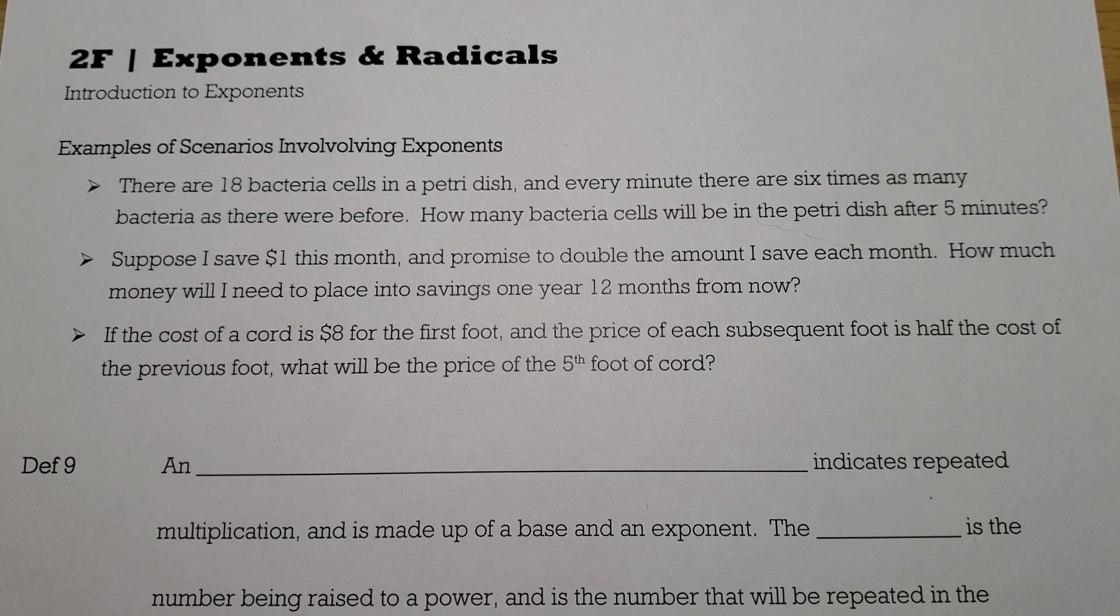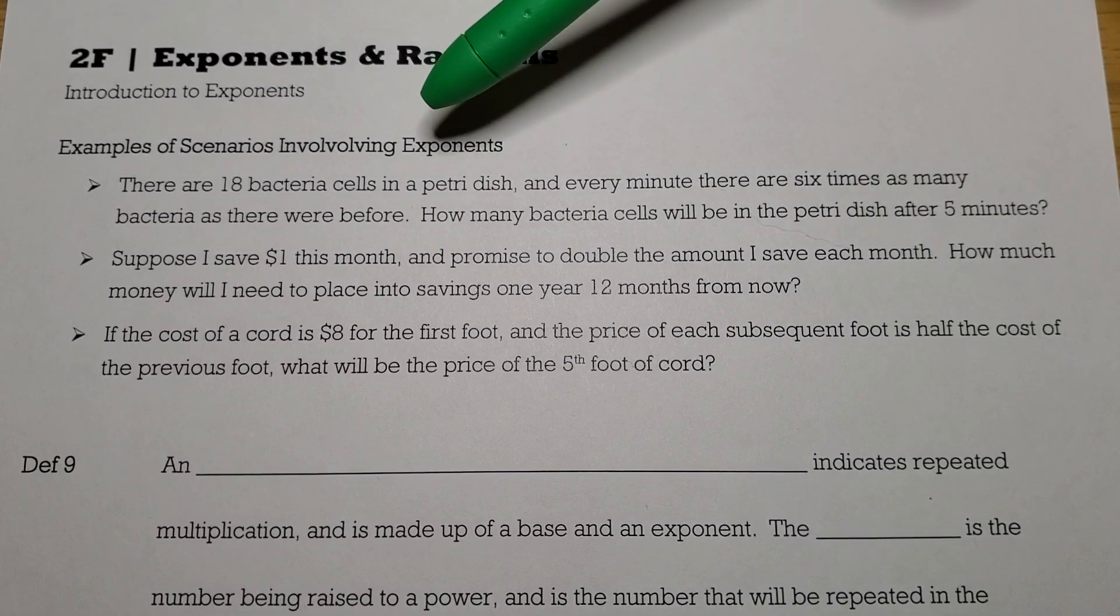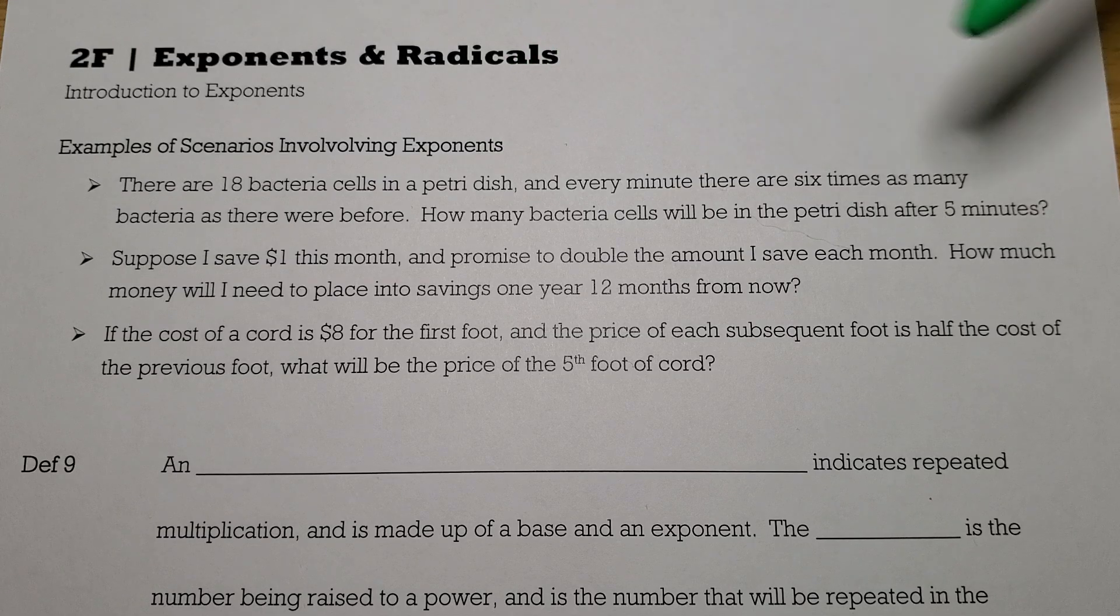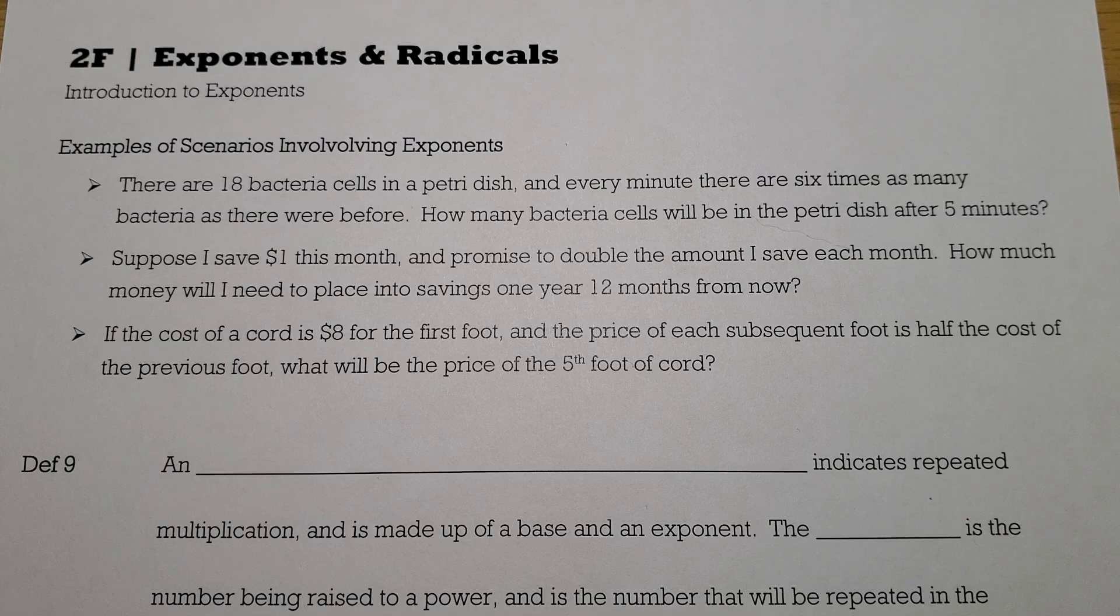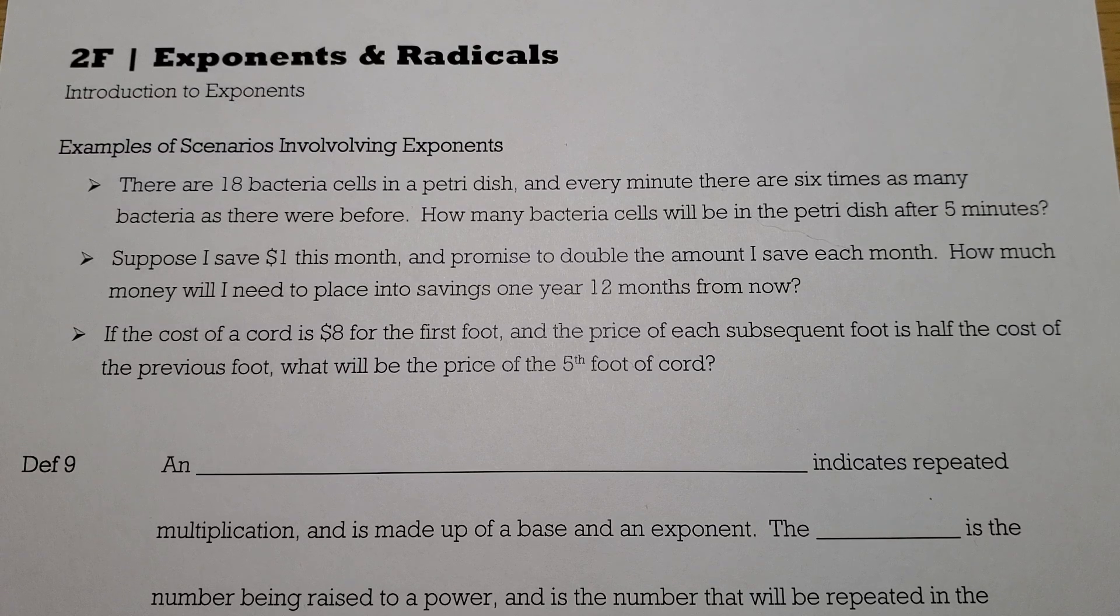I wanted to start out with a few different examples of where you might see exponents happening in the news or in your day-to-day life. For example, you start out with 18 bacteria cells in a petri dish, and every minute there are six times as many bacteria as there were before. So how many bacteria cells are there going to be after five minutes? Every minute it gets multiplied by six, it's six times as many.